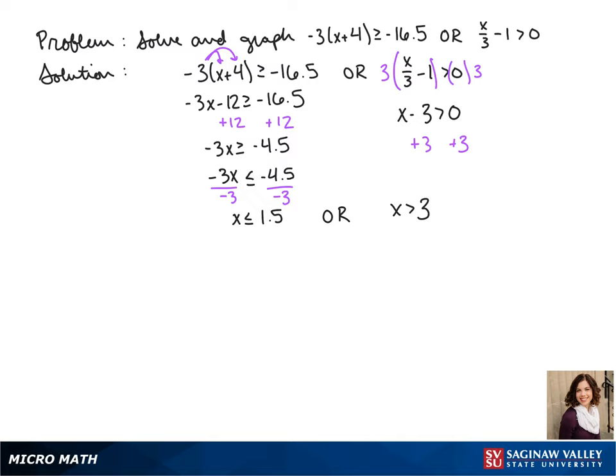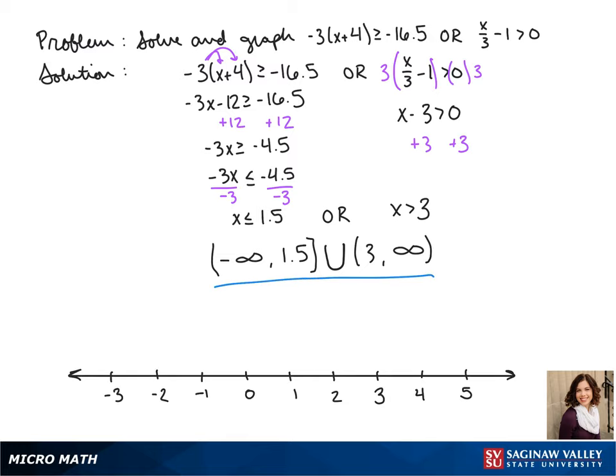That means that in our interval we are going from negative infinity to 1.5, since it could be anything less than 1.5. And this is a union between these two sets, so it includes both of these sets as possible answers. From 3 to infinity because our possible answers are anything greater than 3 as well.